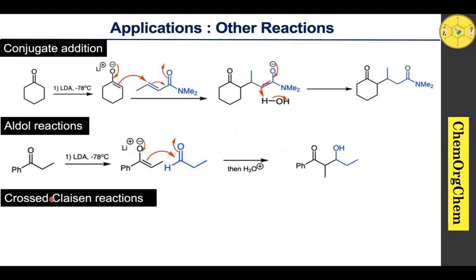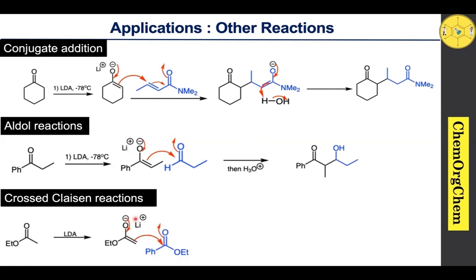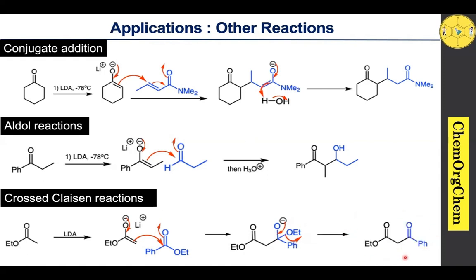LDA is also useful for the crossed Claisen reaction. An enolizable ester treated with LDA provides the corresponding enolate ion, which then reacts with a non-enolizable ester. The electrons attack the carbonyl carbon, and the electrons move toward the oxygen atom, generating an intermediate. This is followed by kick-off of the ethoxide ion, yielding the corresponding 1,3-dicarbonyl compound.